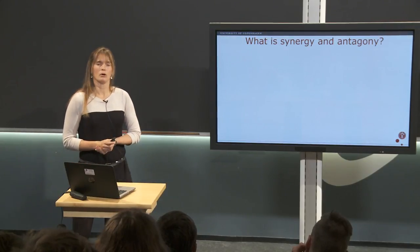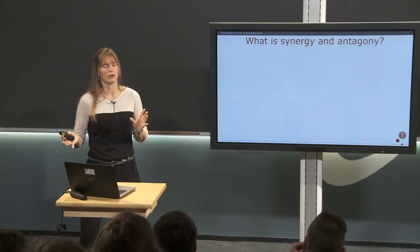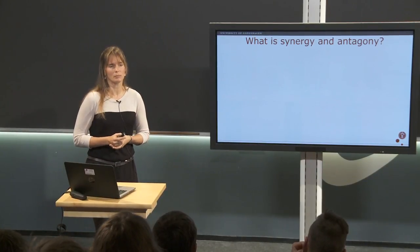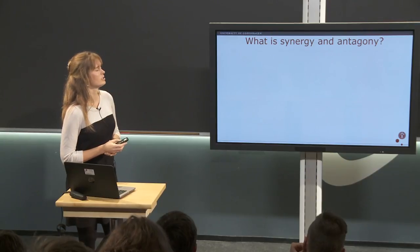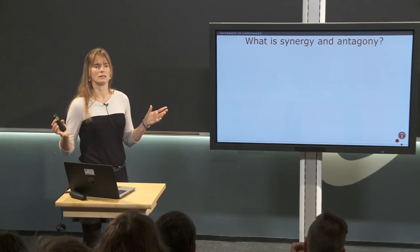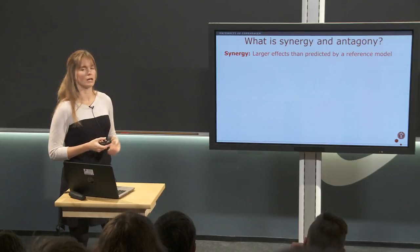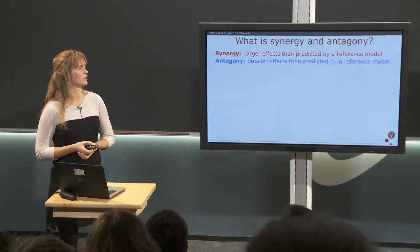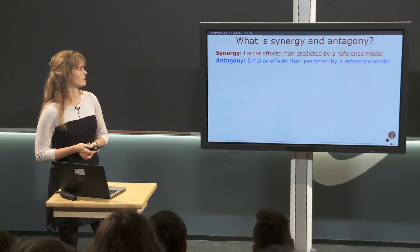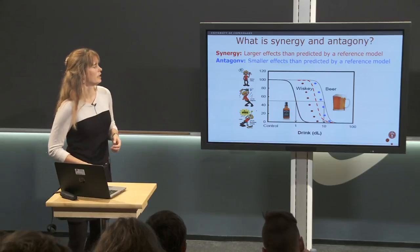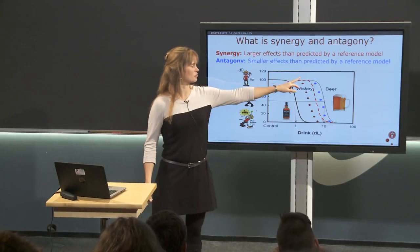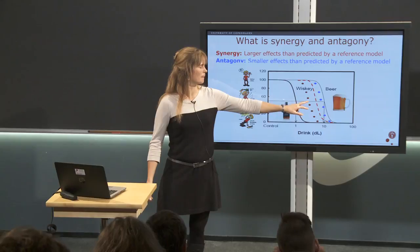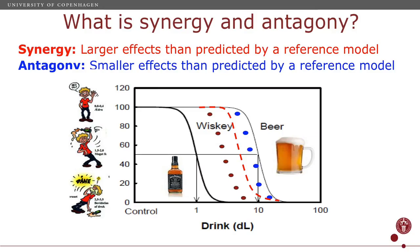The model explains toxicity well in about 90% of cases, but in the remaining 10% we have either synergy or antagonism. Synergy means chemicals interact so you get a larger effect than predicted; antagonism means you get a smaller effect than predicted. For our little guy, synergy would be getting drunk much faster than predicted from his cocktail, and antagonism would be needing to drink even more than predicted to get the effect.